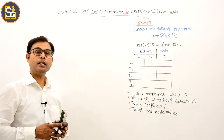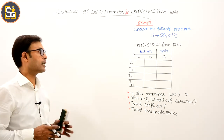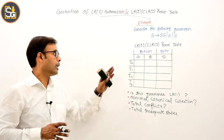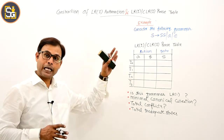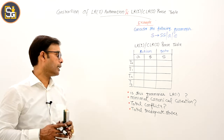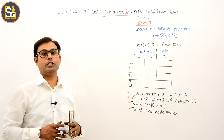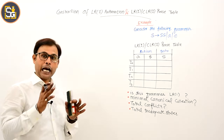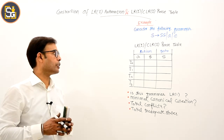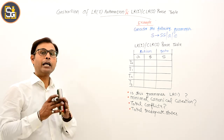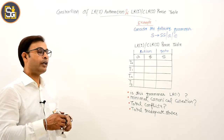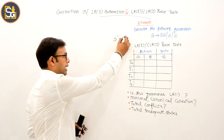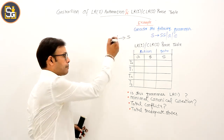Consider this grammar and construct the LR1 automation for it, the LR1 parse table, and also answer the given questions. For LR1 automation we need augmented grammar, so we'll add one more production: S' derives S.